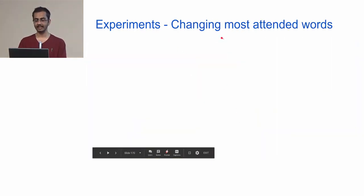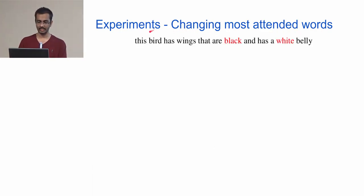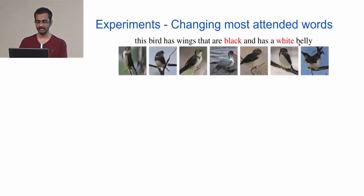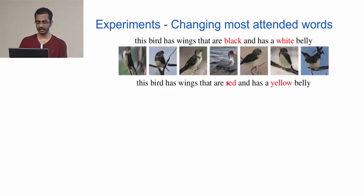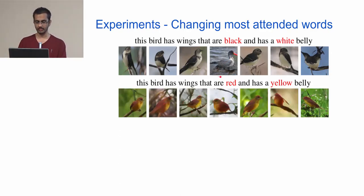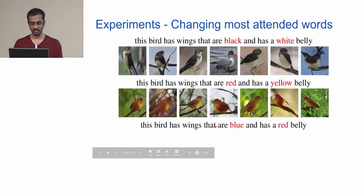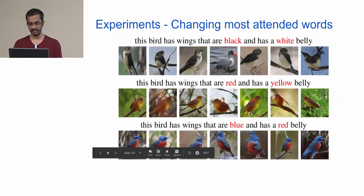An interesting experiment changes the most attended words in a caption. For 'this bird has wings that are black and has a white belly', the top two attended words were 'black' and 'white'. Replacing them with 'red' and 'yellow', and then 'blue' and 'red', produced generated images with noticeably different color schemes, demonstrating that the network genuinely uses those attended words to determine image appearance.